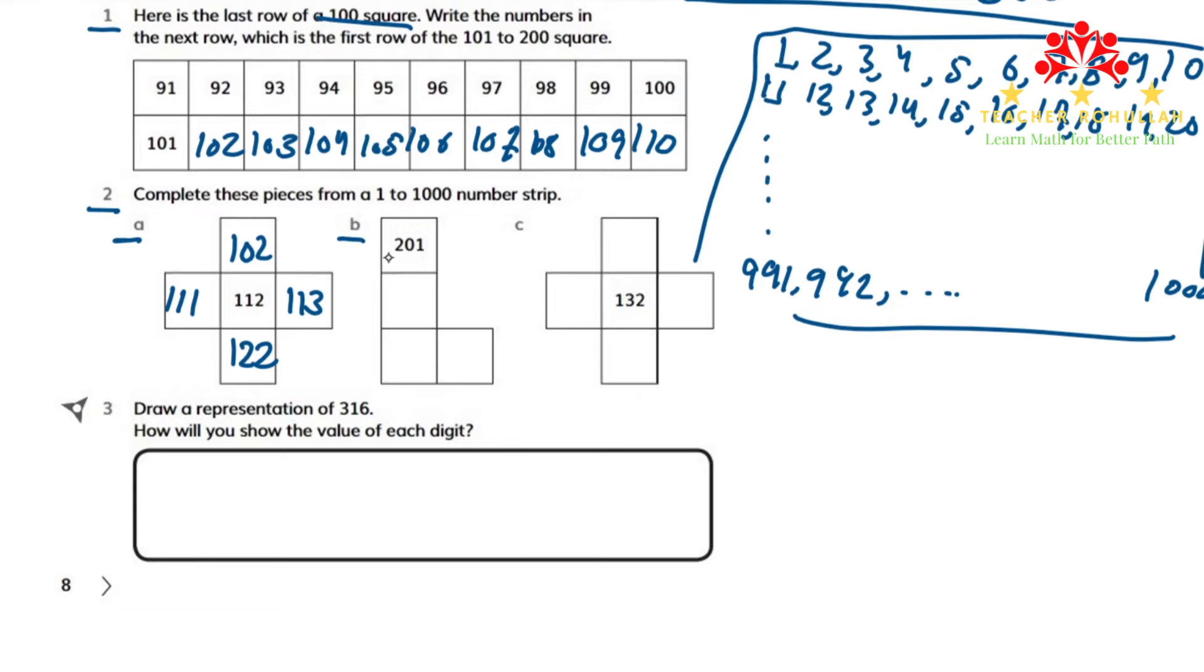In part B, we have 201. 201 is over here. Then we will have 211, 212, and 213.